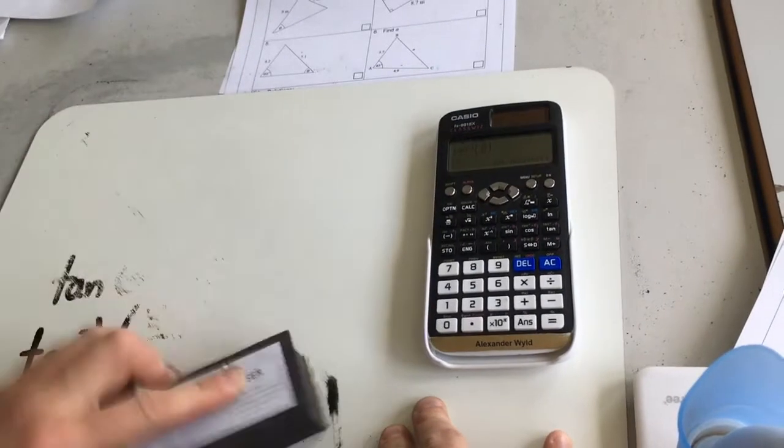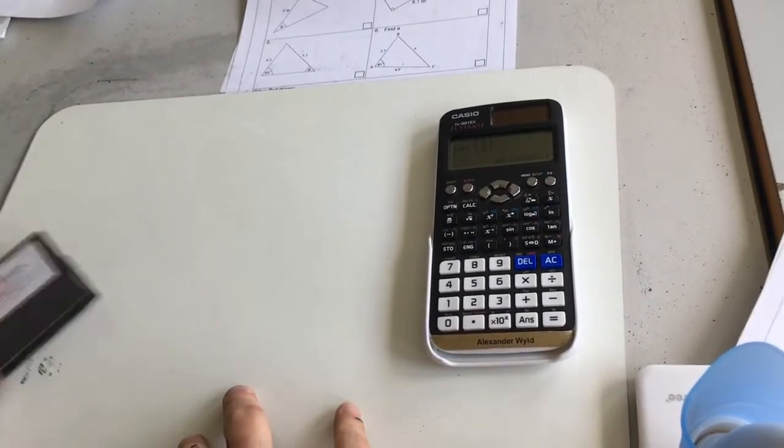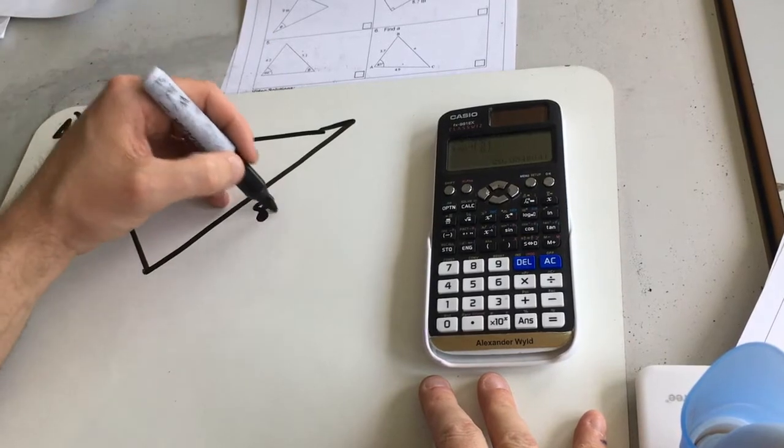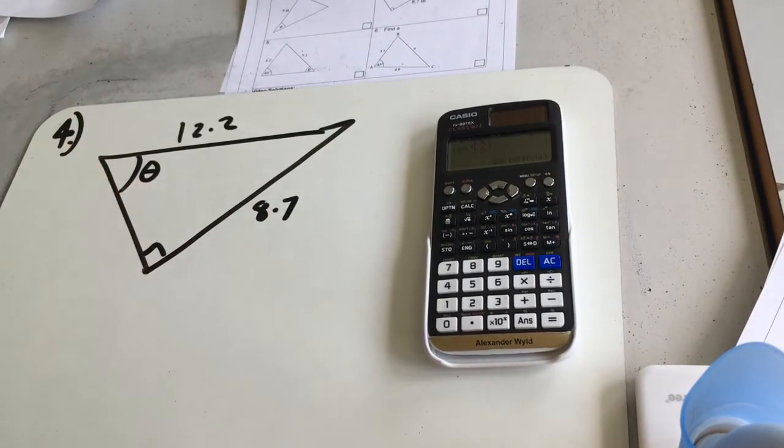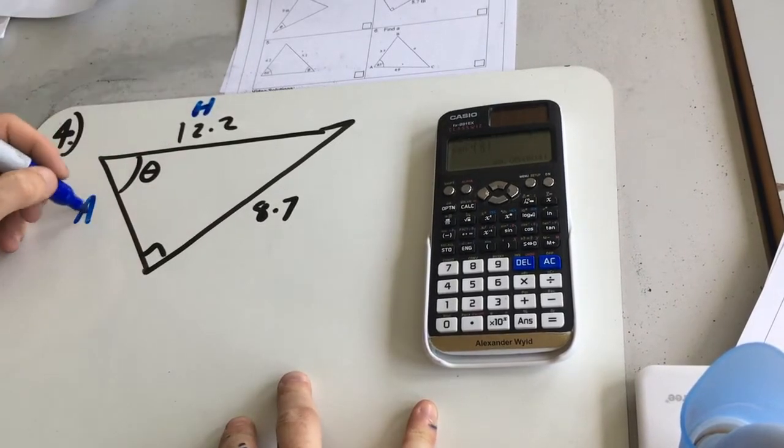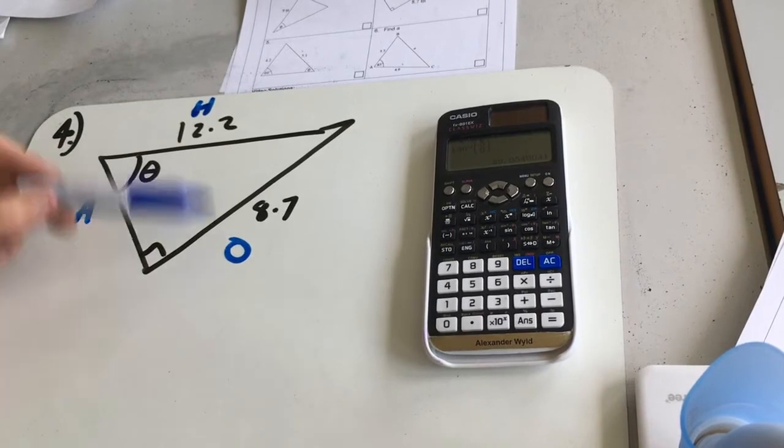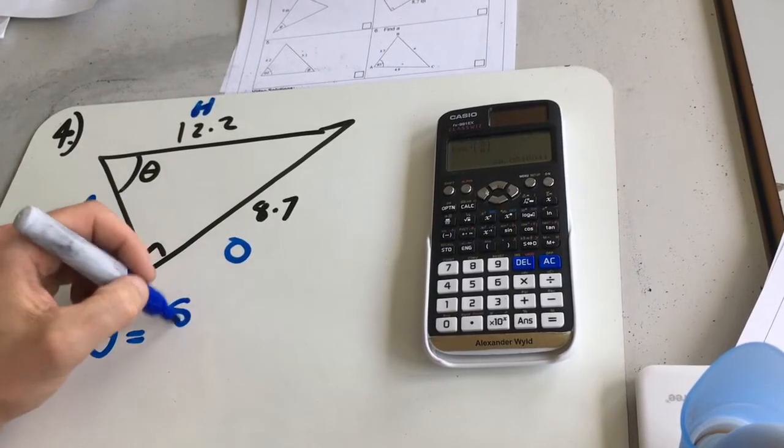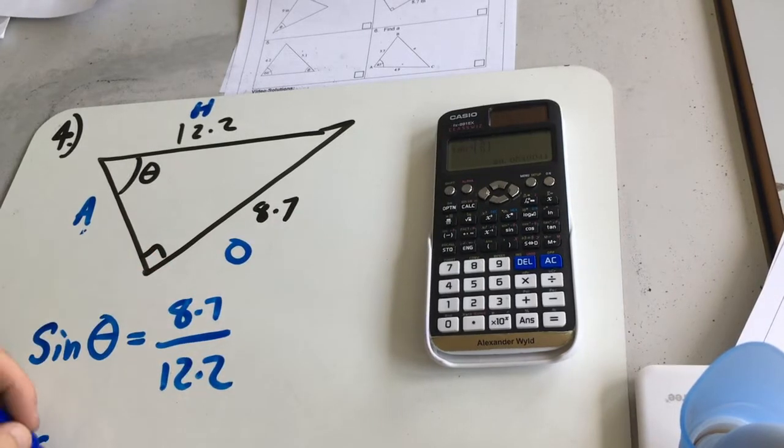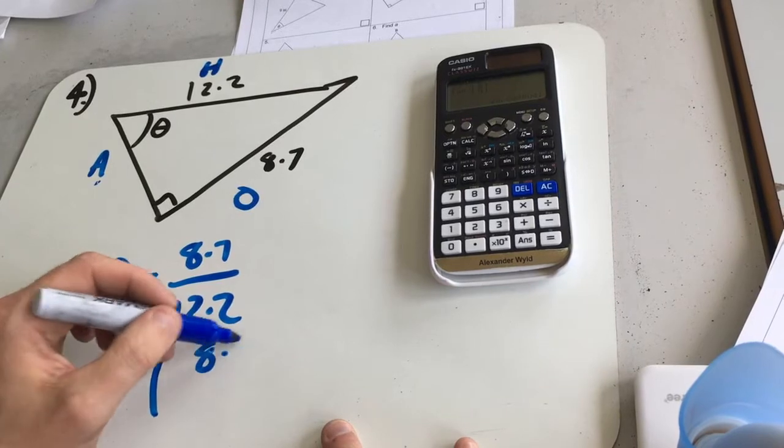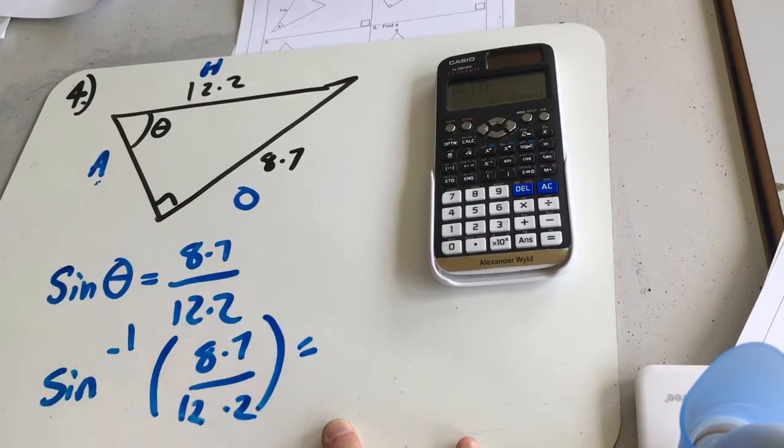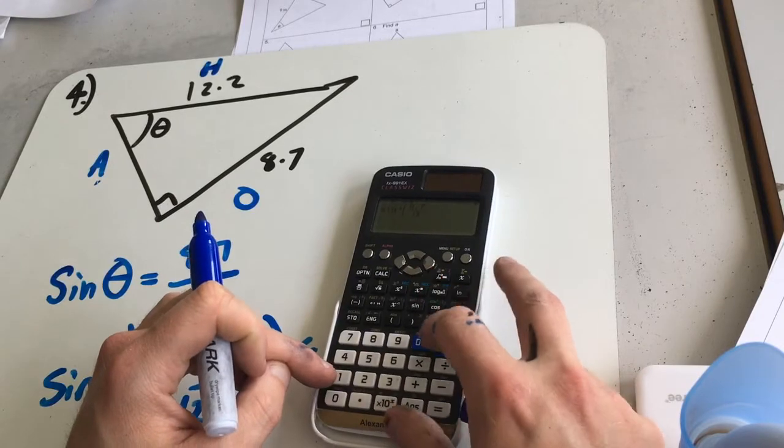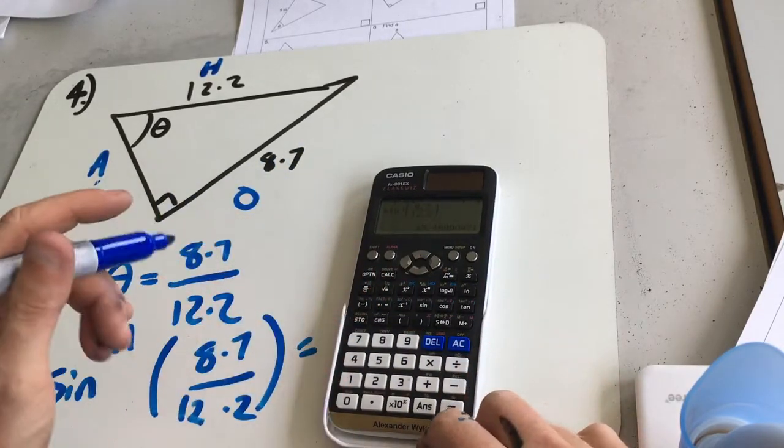Cool. Right, question 4. 12.2, 8.7, and there's theta. So label things up again, hypotenuse there, adjacent there, opposite there. So this time we've got a sine question. We're trying to find the angle. So I know sine theta is the opposite, 8.7 over the hypotenuse 12.2. So we're going to go inverse sine, sine to the power minus 1 of 8.7 over 12.2. And that's going to give us theta, so calculator. Which gives us 45.5.